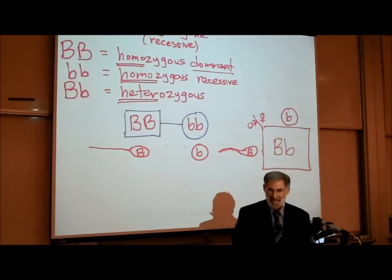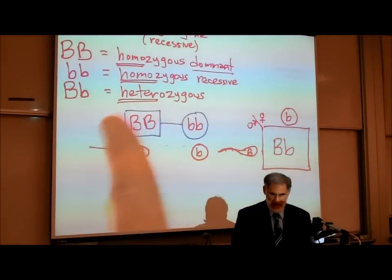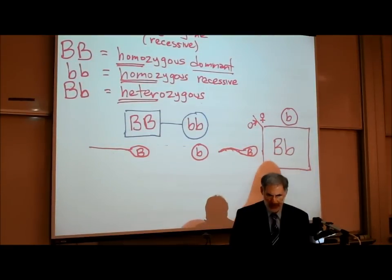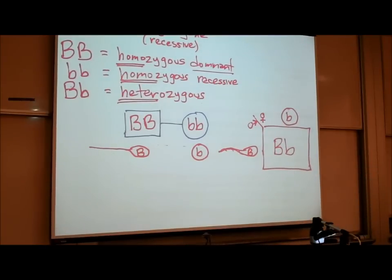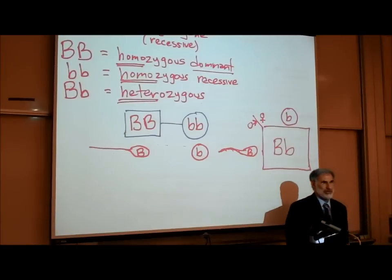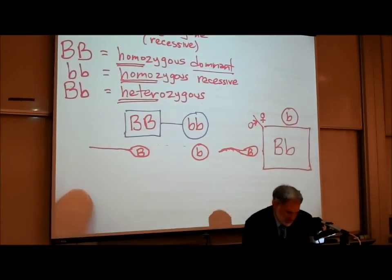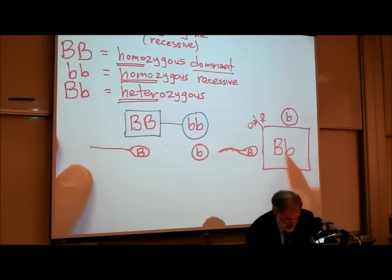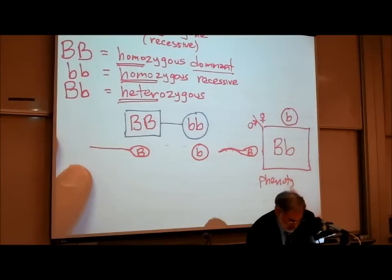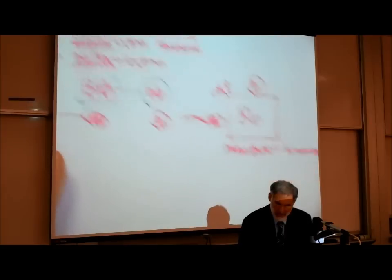Every child will have brown eyes because brown is dominant — that's what you see. The genotype is big B, little B. They are carriers. The phenotype — what you see — would be brown eyes. All their children would have brown eyes.